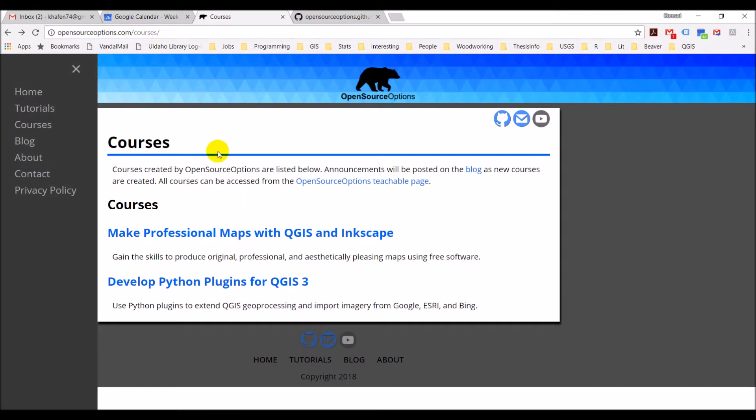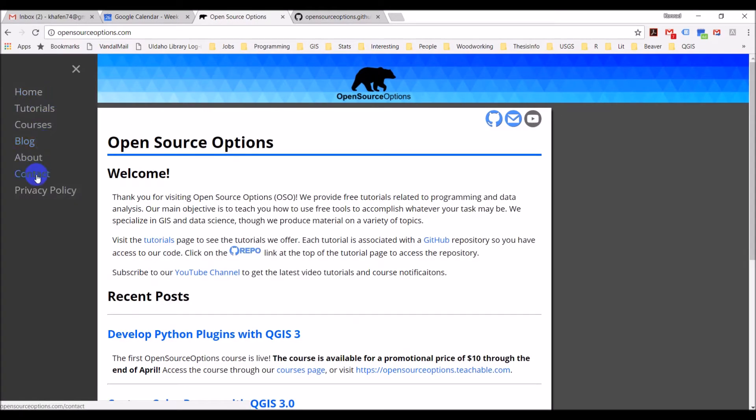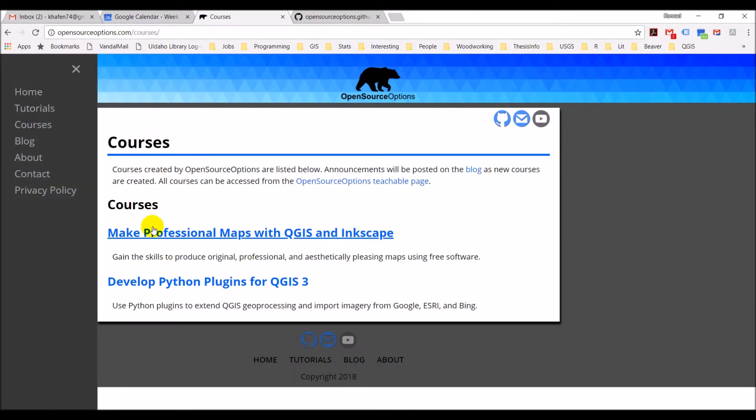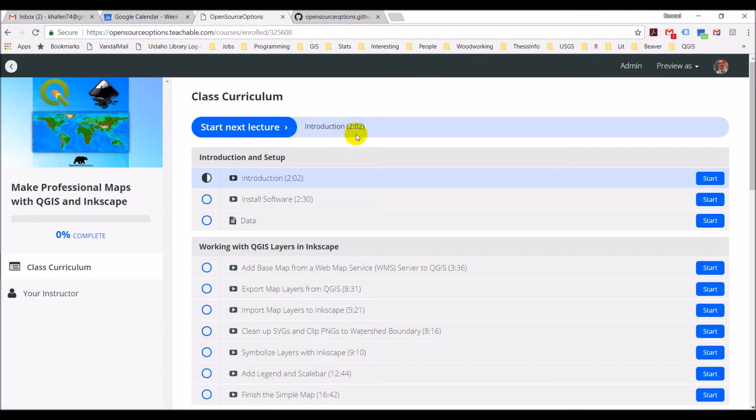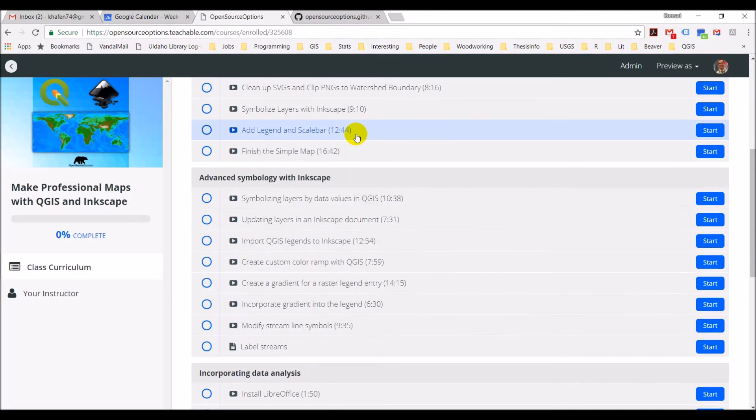Let me just pull this up here, so I'm on opensourceoptions.com, we go to the home page, we can go to courses, and it's make professional maps with QGIS and Inkscape. And this will take you to the course page where you can enroll in this course.